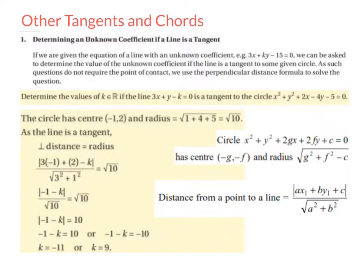Let's have a look at the question. Determine the values of k, which is an element of the real number set, if the line 3x plus y minus k equals 0 is a tangent to the circle x squared plus y squared plus 2x minus 4y minus 5 equals 0.